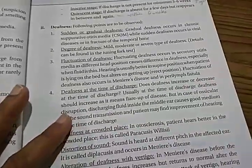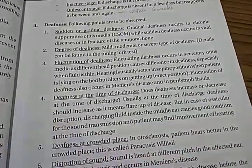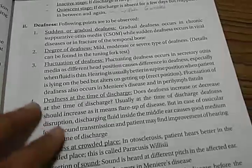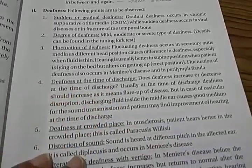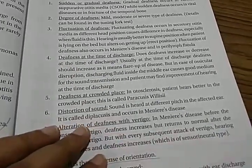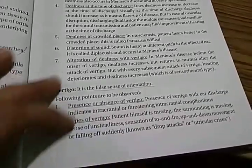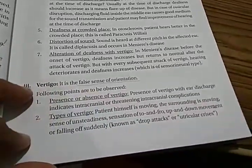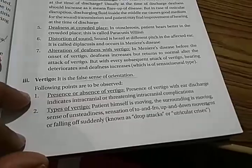Deafness - sudden or gradual deafness, degree of deafness, fluctuation of deafness, deafness at time of discharge, deafness at crowded place, distortion of sound, alteration of deafness with vertigo. And about vertigo - what all will you ask - presence and absence of vertigo, types of vertigo.